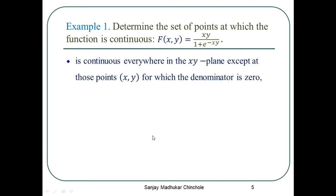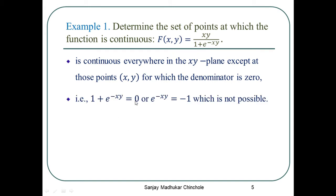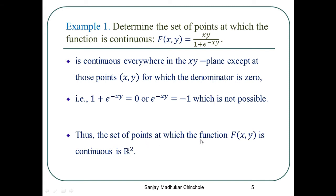When does the denominator equal 0? The denominator is 0 when 1 + e^(-xy) = 0, meaning e^(-xy) = -1, or in other words e^(xy) = -1. But e raised to any real number cannot equal -1. Therefore, the set of points at which the function f(x,y) is continuous is all of R². There is no point of discontinuity for this function.